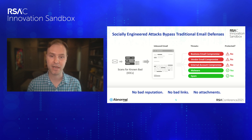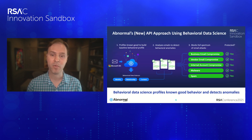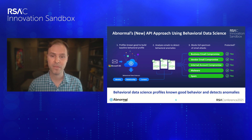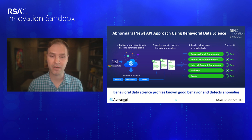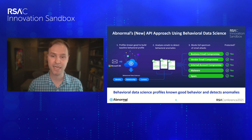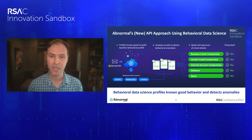Abnormal takes a fundamentally different architectural approach. We don't integrate into the network gateway — we integrate directly into the Microsoft 365 platform. The product can be installed, integrated, and configured in a single click through cloud-native APIs. We then build behavioral profiles of the organization by looking at organizational identity, relationships, and content to baseline normal behavior. When emails come into the environment, we use behavioral anomaly detection to detect and block these attacks.